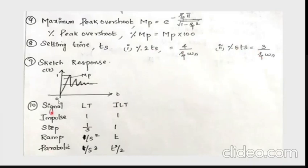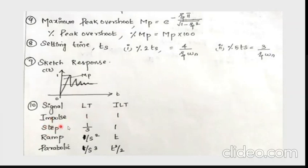This is the response of an underdamped system. The Laplace transforms of different input types are: impulse input has Laplace transform of 1, step input is 1/s, ramp input is 1/s², and parabolic input is 1/s³ with inverse Laplace transform of t²/2.